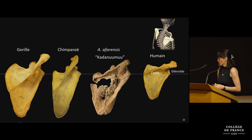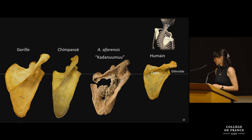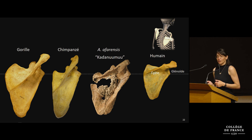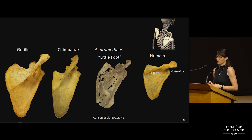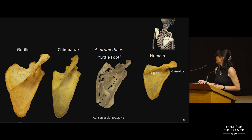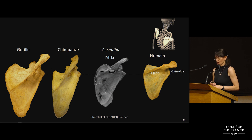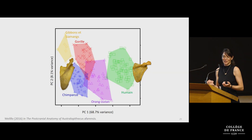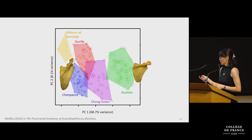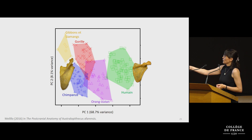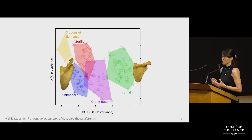Now that we have a much more complete fossil record, it's become clear that the australopith scapula actually looked more similar to humans than previously understood from those glenoid fragments. The scapula from the Kadanuumuu partial skeleton from Woranso-Mille, dated to about 3.6 million years old, shows this. Very similar morphology appears in South African hominins, including the scapula of the Little Foot partial skeleton, now argued to be even older than 3.6 million years, and the same is true of the scapula from the MH2 partial skeleton of Sediba.